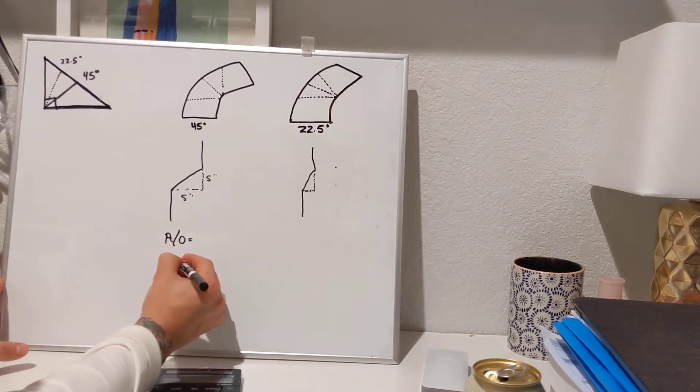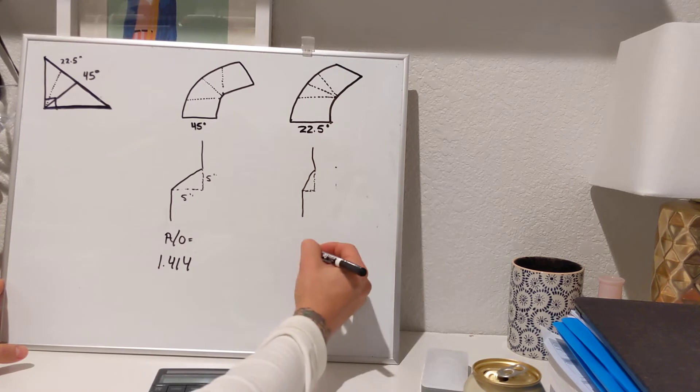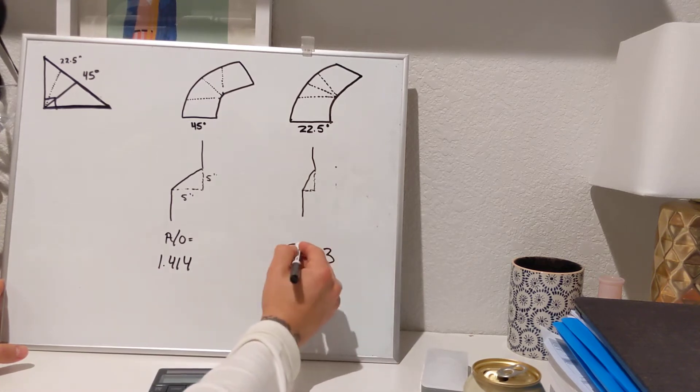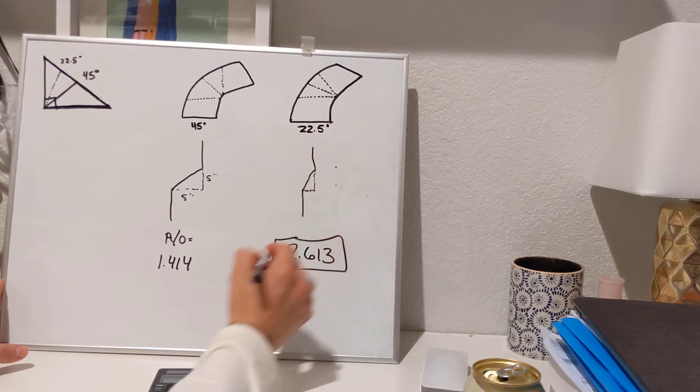This one was 1.414, that's a 45-degree offset. This one is 2.613. So these are the two major variables, or constants, you should say.